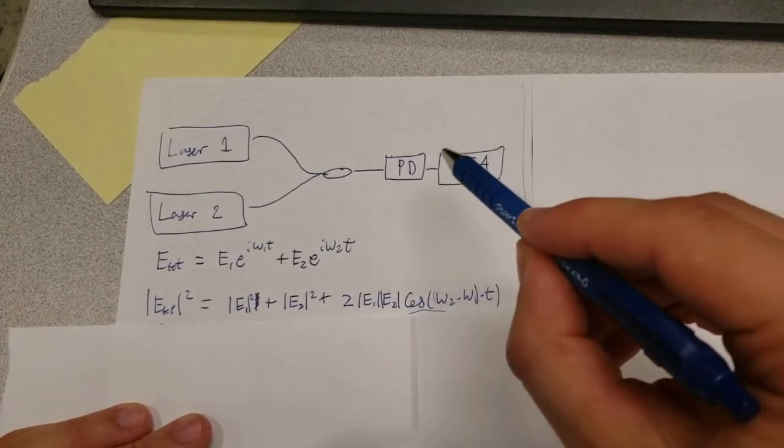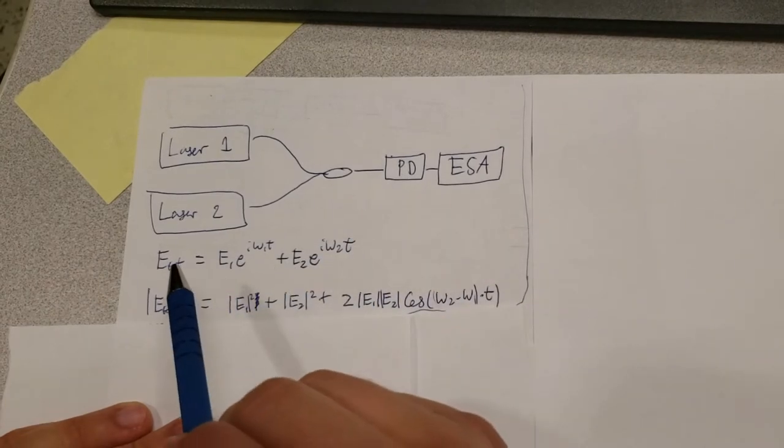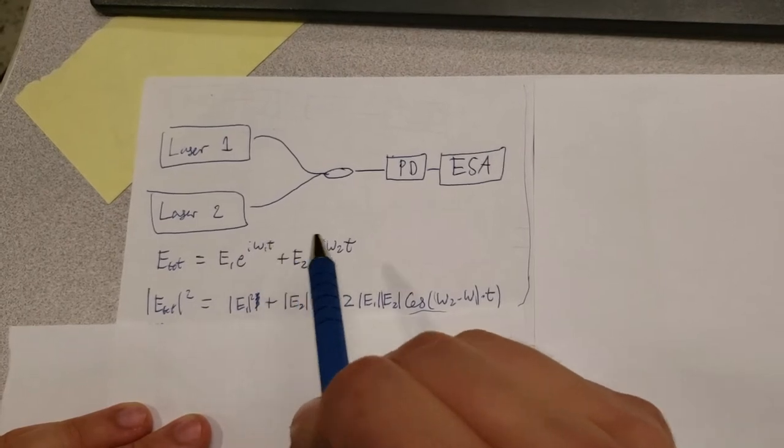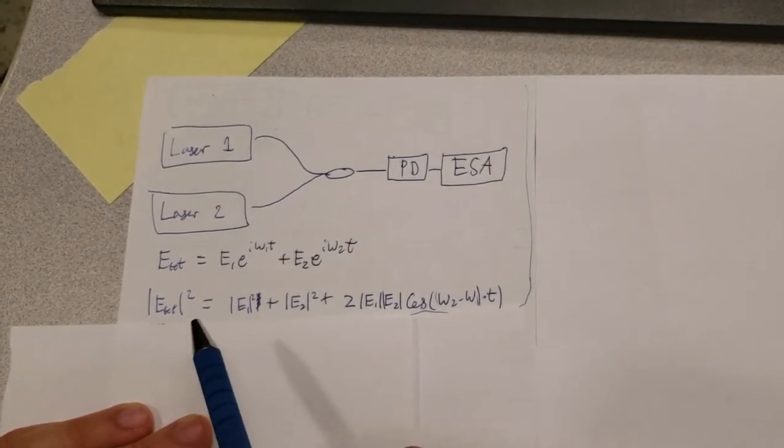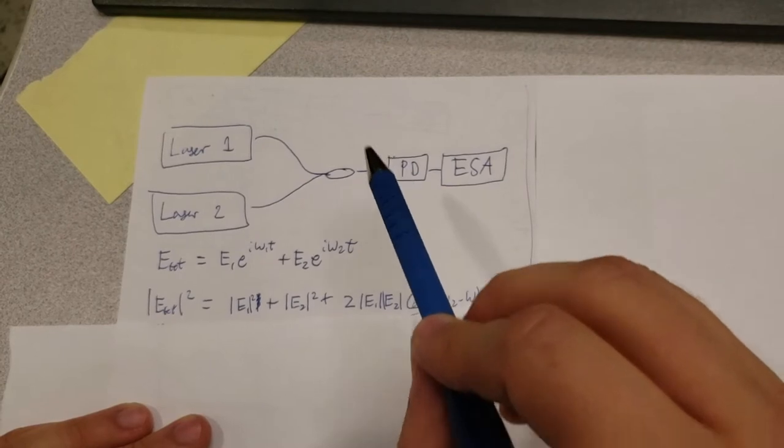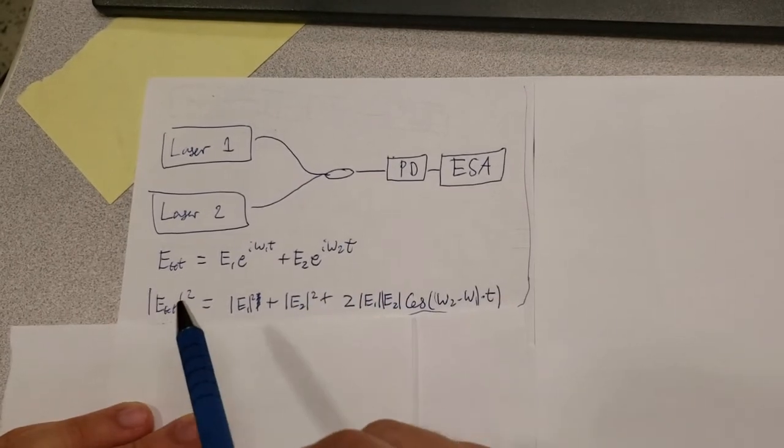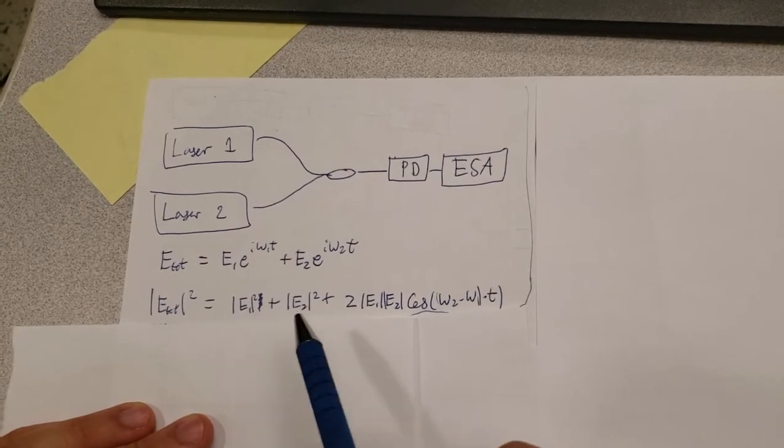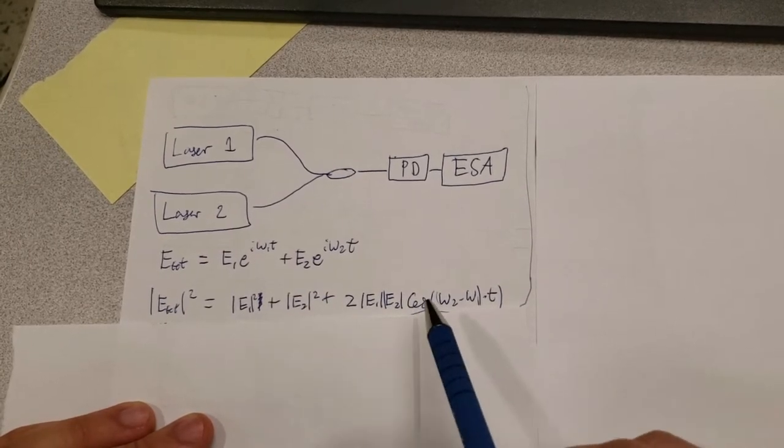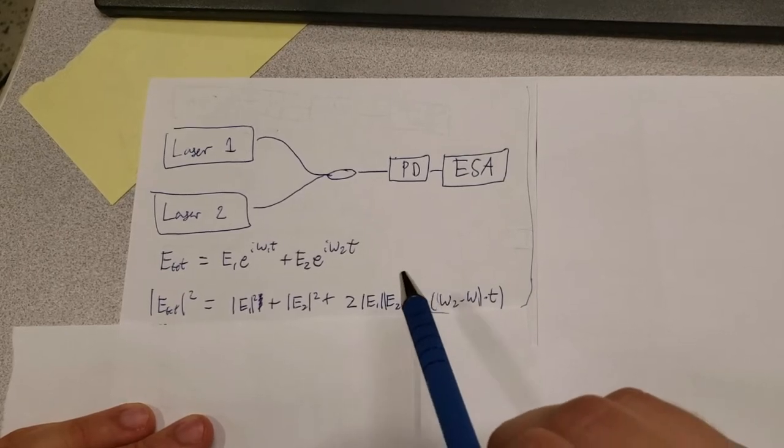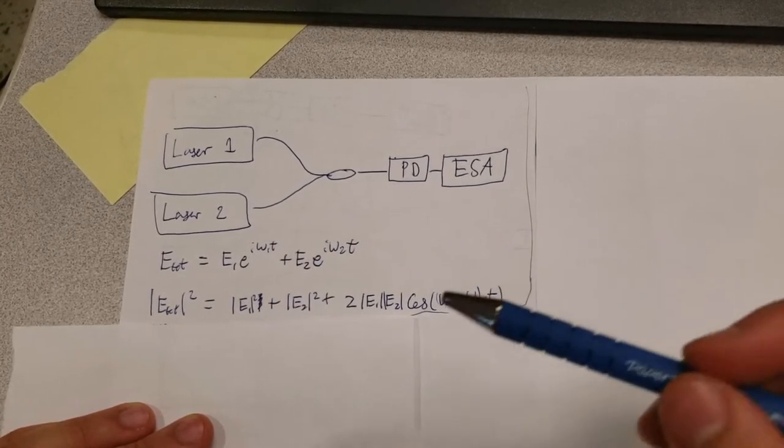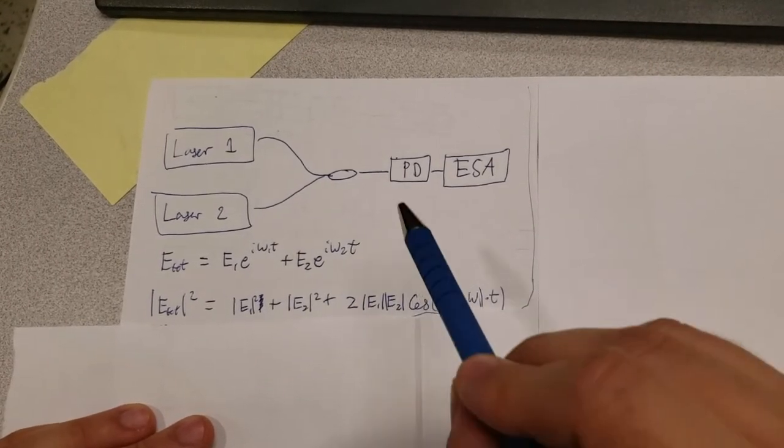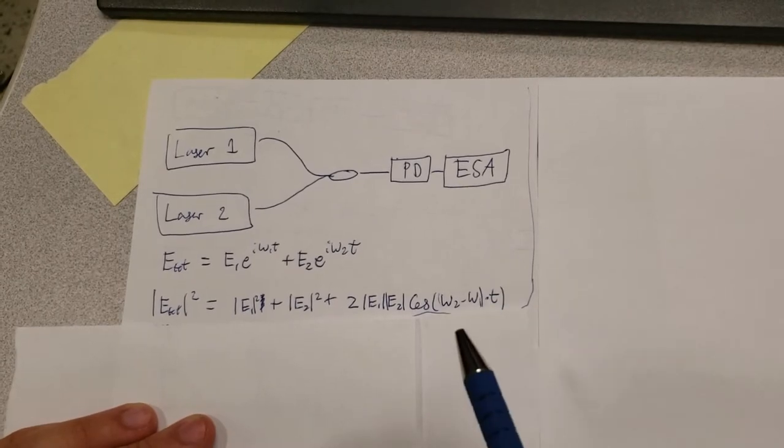Now we have replaced that with an electrical spectrum analyzer but essentially it's the same idea. What we saw is that the total electric field hitting the photodiode will be given by the sum of these two electric fields which are oscillating at two different optical frequencies. Then the power measured at the photodiode is the absolute square of this expression, which equals two constant terms and then this term that oscillates with a frequency equal to the difference between these two optical frequencies. For example, if these two laser frequencies are spaced one gigahertz apart, we'll measure a one gigahertz electrical signal coming out of the photodiode.